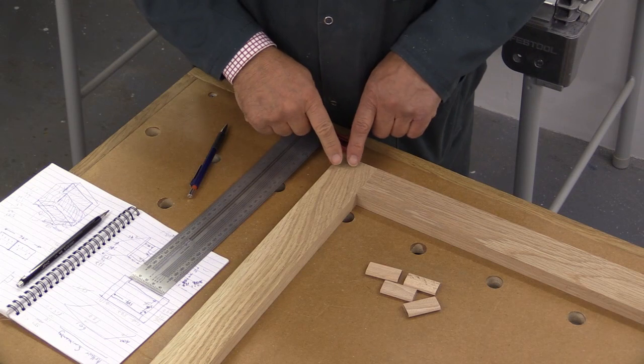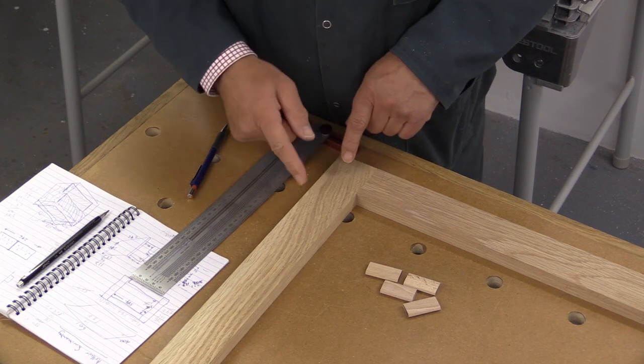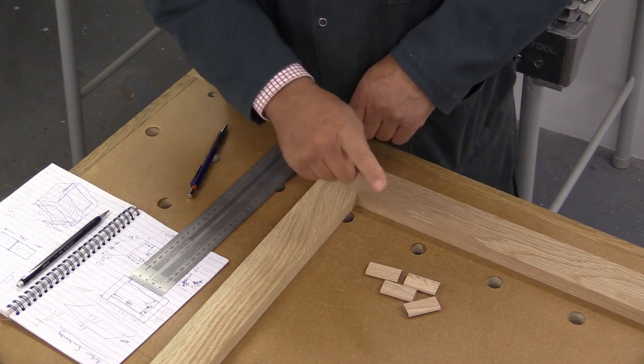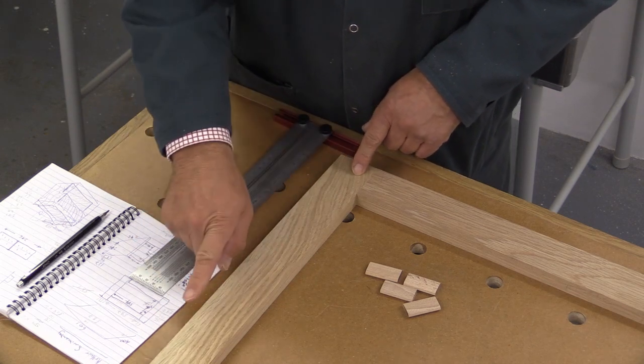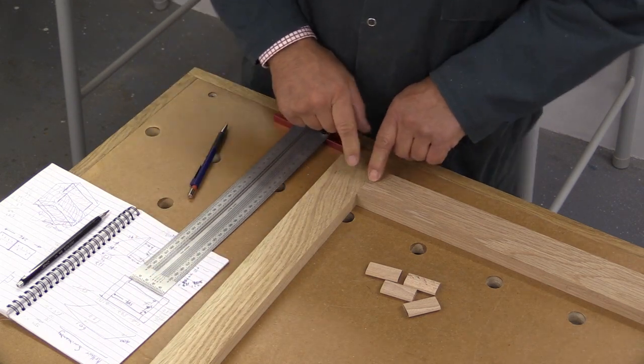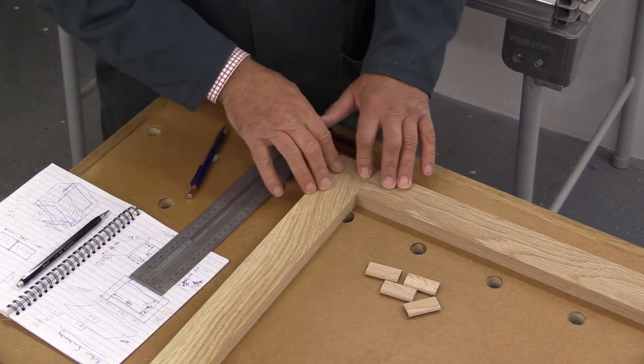You may be able to see that I've put a letter A here. There's a B at that end, C in the opposite corner and a D up here and so I now know with some certainty that these are going to go back in the right place.